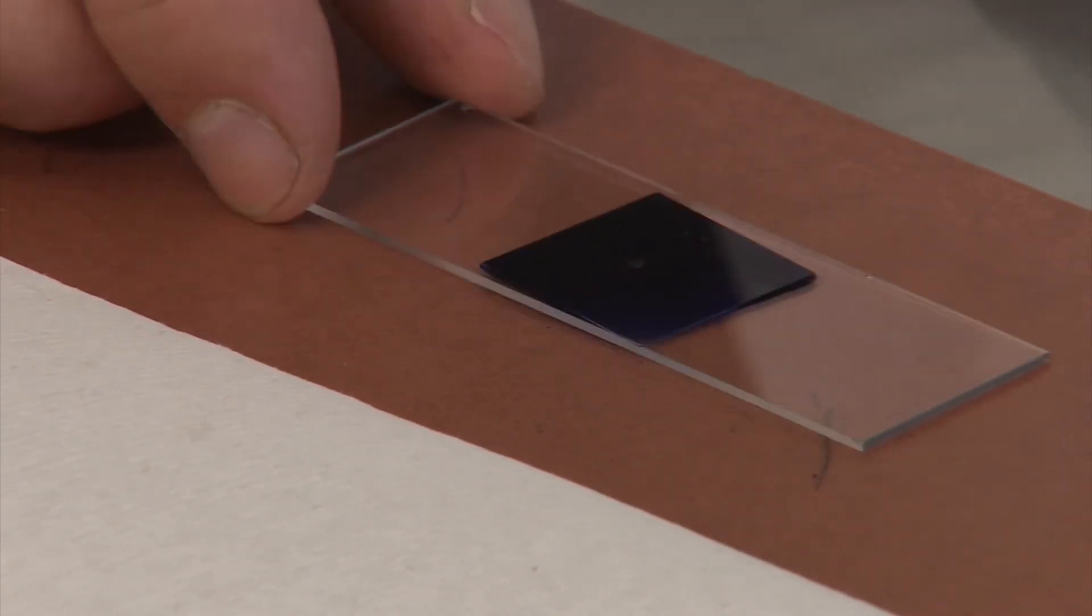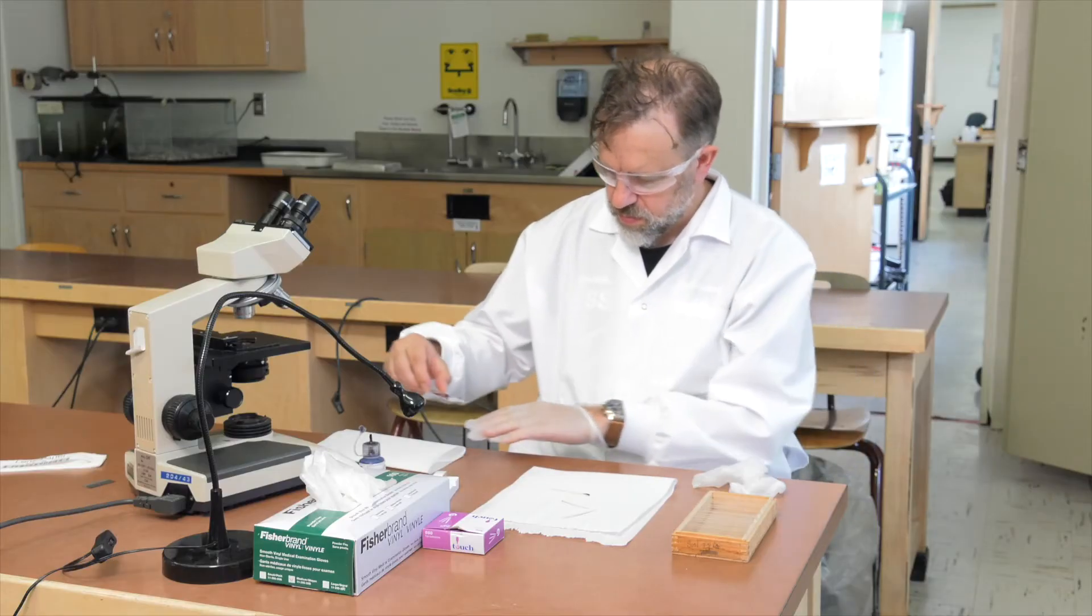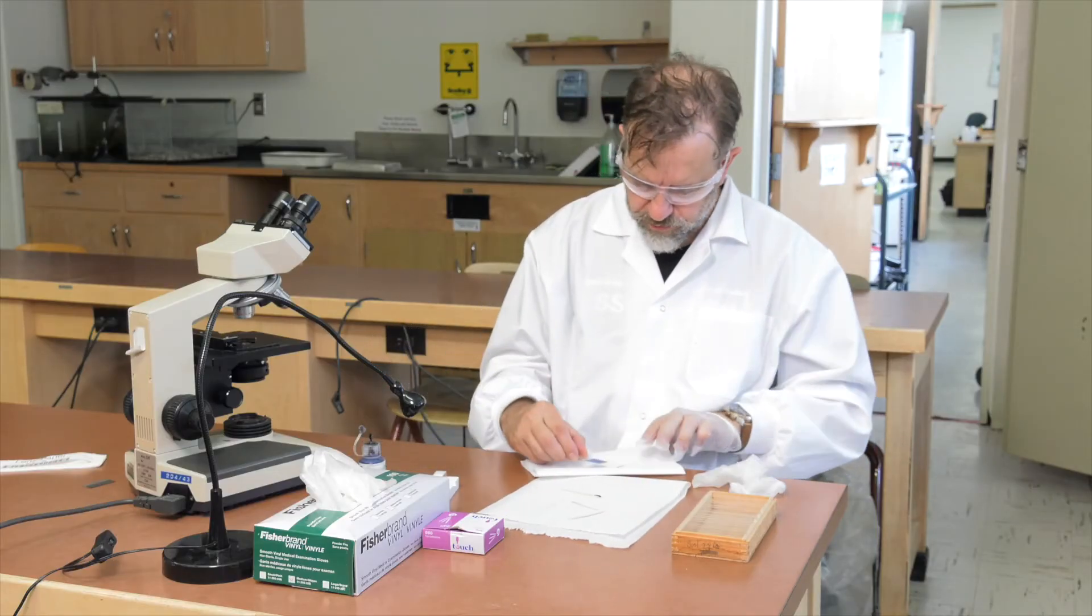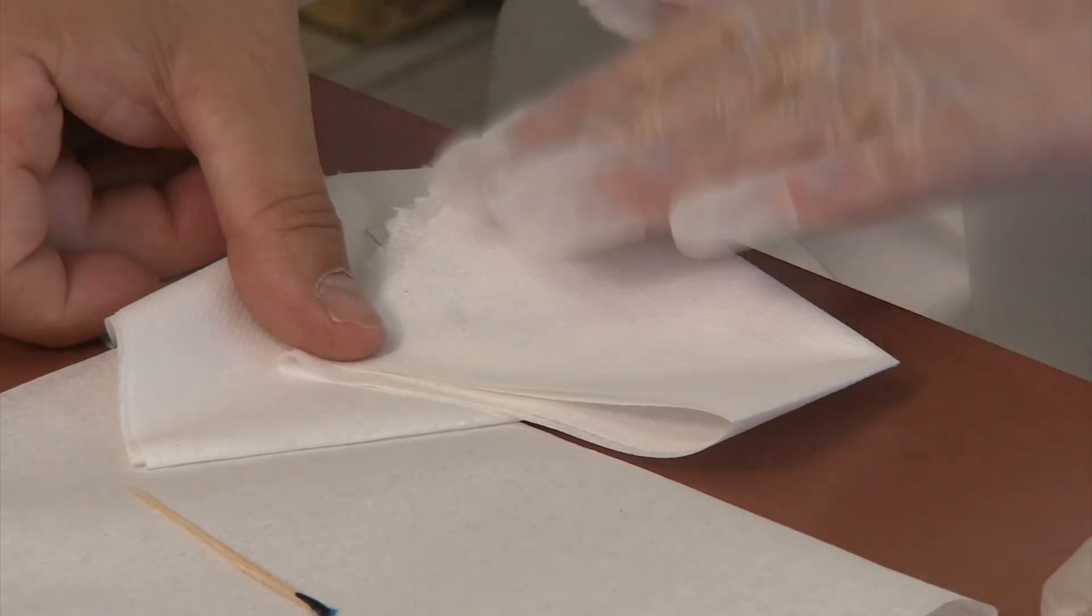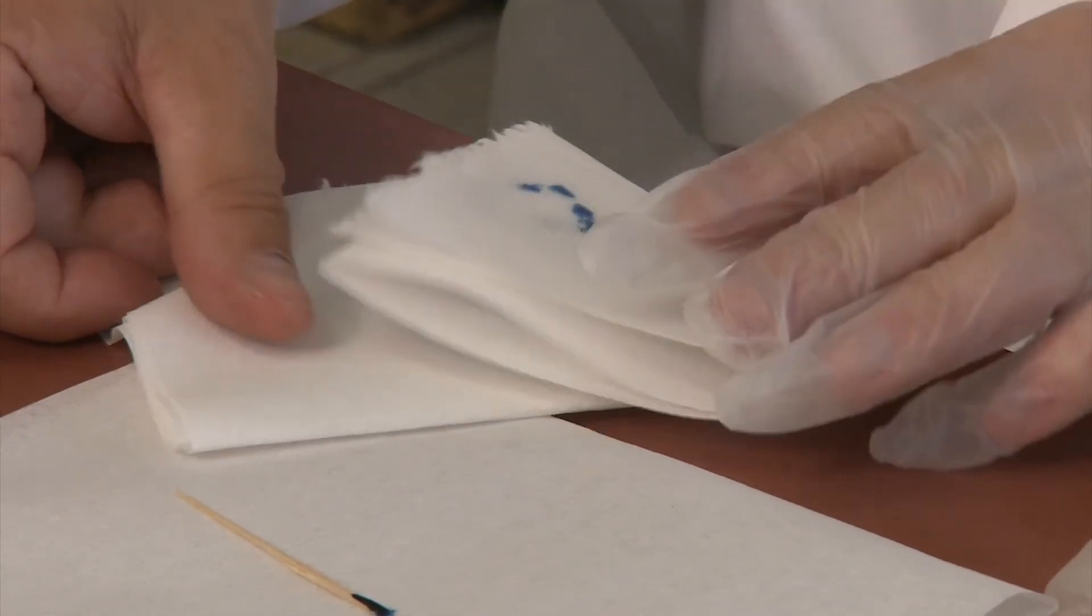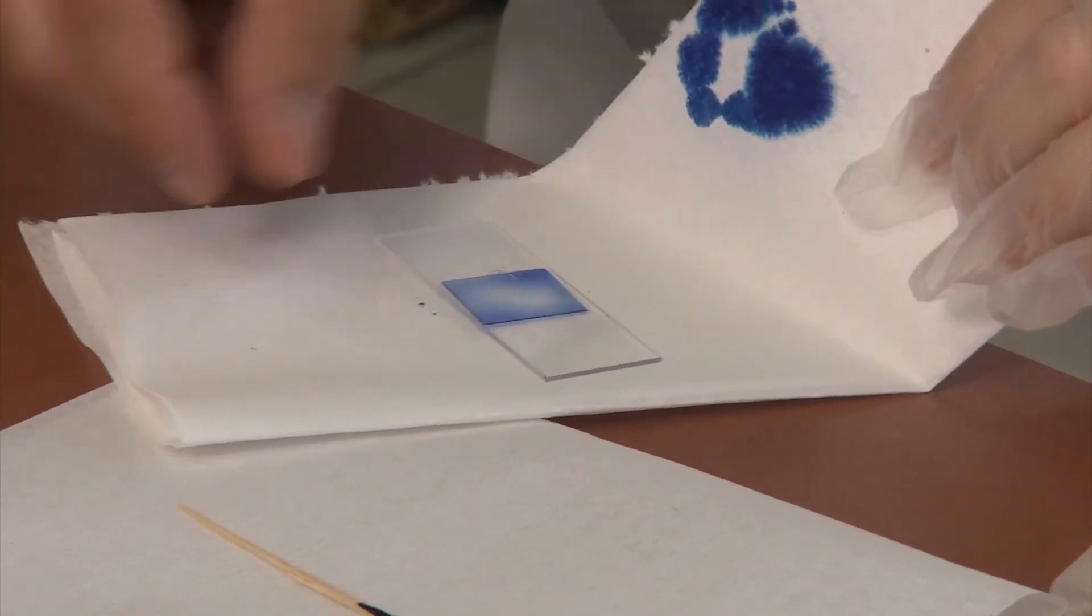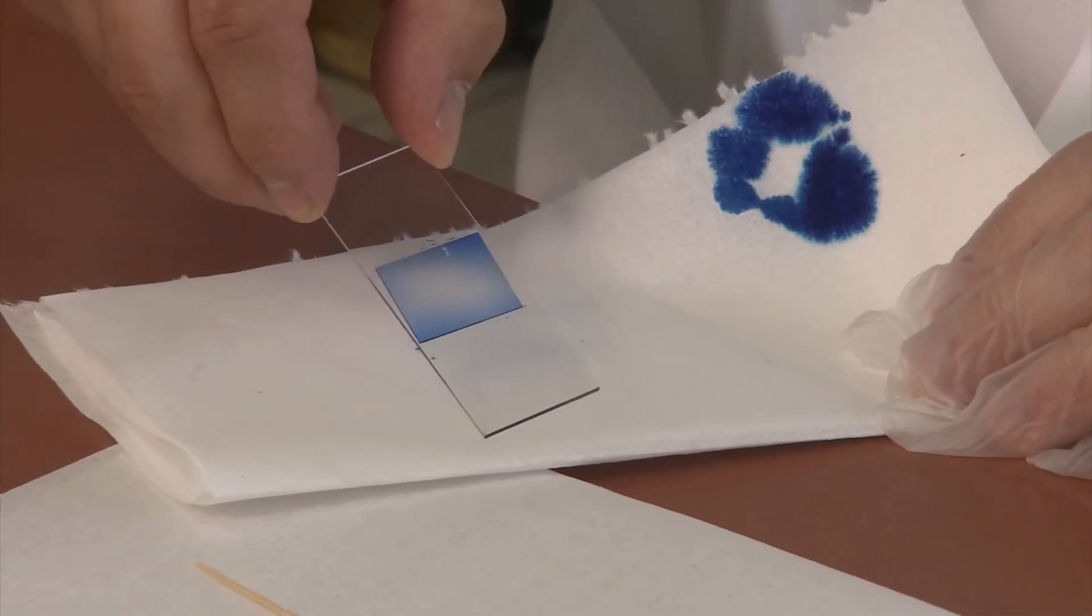If the stain appears to be very dark instead of light blue, place your slide between two pieces of paper towel and gently apply pressure to the cover slip to squeeze out some of the stain. Be careful not to apply too much pressure or your cover slip will break. Do not add distilled water as this will wash away the stain.